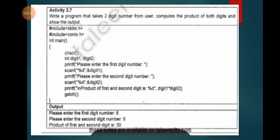What does product mean? Multiply. We have to take two numbers, multiply them, and show the output. In the body of the function, clear screen. Integer digit1 and digit2.